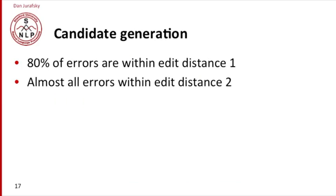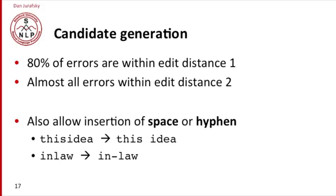I've just shown you candidates that are within edit distance of one. It turns out that 80% of spelling errors are within edit distance of one, and almost all errors are within edit distance of two. In practice, we also want to allow not just insertion and substitution of letters, but also of spaces or hyphens. For example, if the user types 'thisidea', we'd like to realize that there should be an insertion of a space.